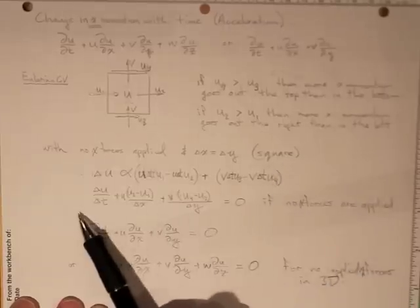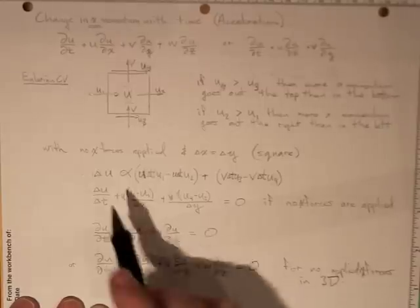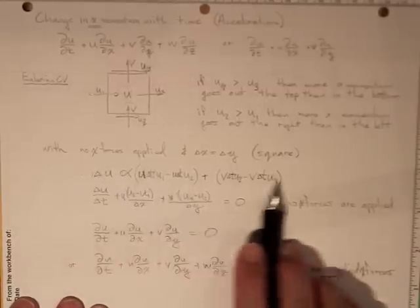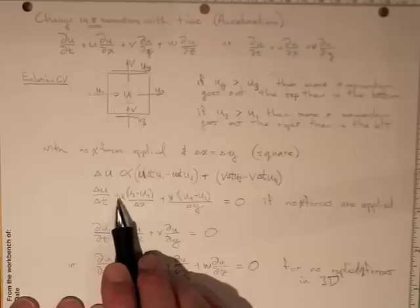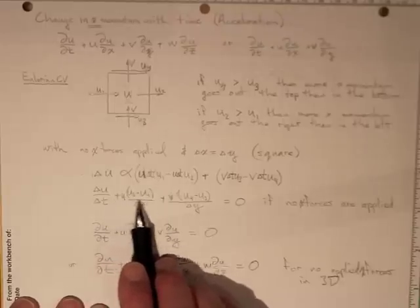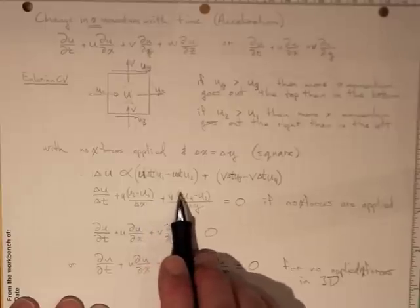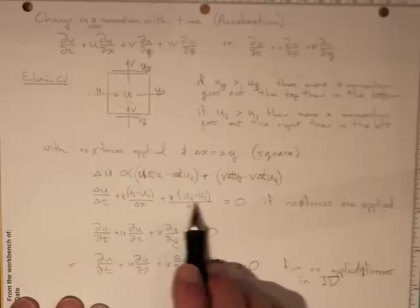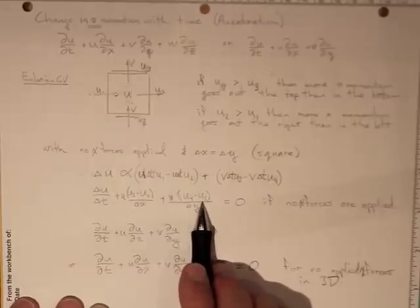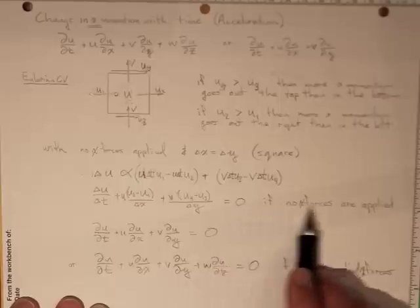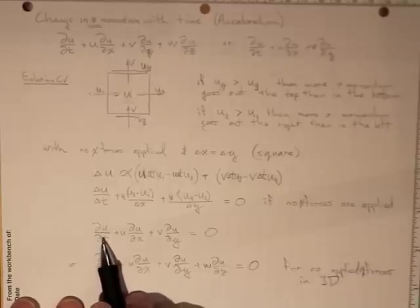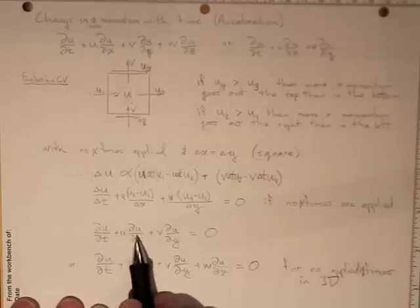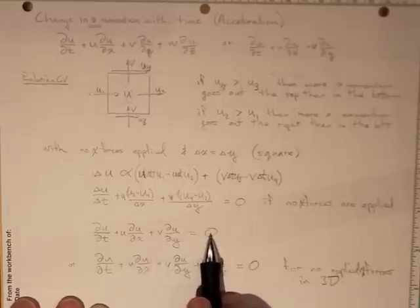Divide by delta t and take into account the volume here and the surface areas here, and you wind up with delta u over delta t plus u times u2 minus u1 over delta x plus v times u4 minus u3 over delta y equal to zero if there are no x forces applied, because there can't be any net change in the momentum. So we wind up with di u di t plus u di u di x plus v di u di y equal to zero.